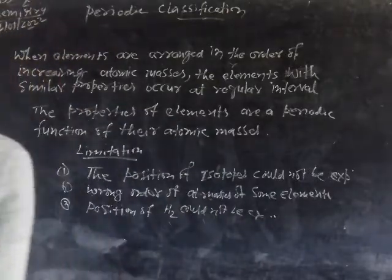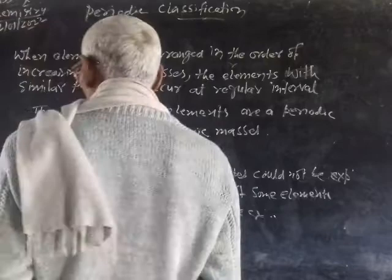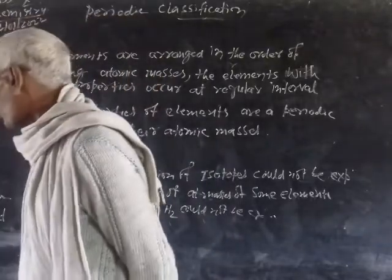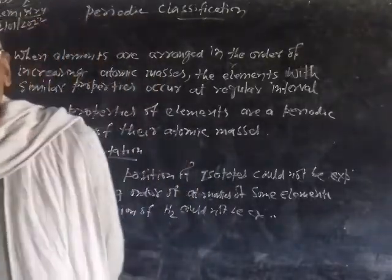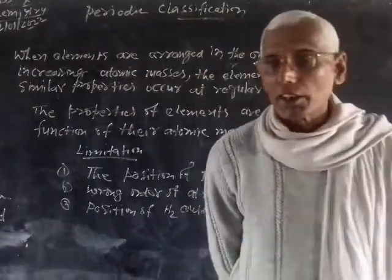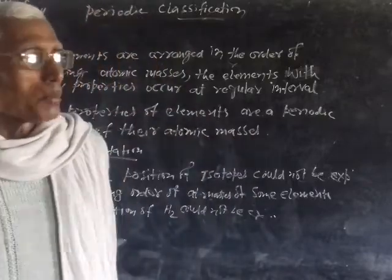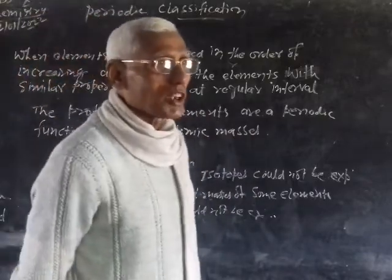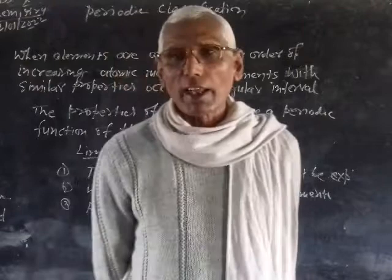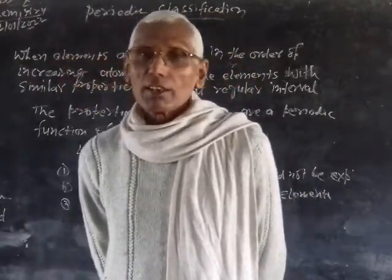The Mendeleev Periodic Table could accommodate noble gases when they were discovered. At that time, there was no knowledge of the noble gases. When the noble gases were found, there was a different slot which was adjusted by the table.